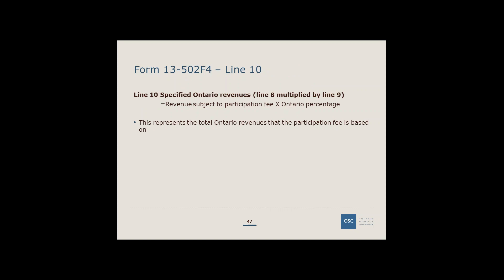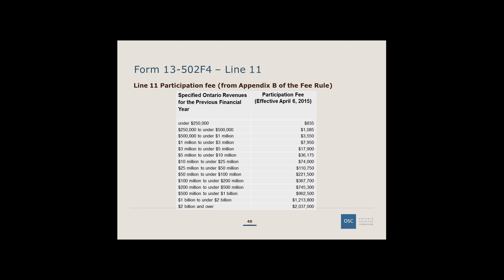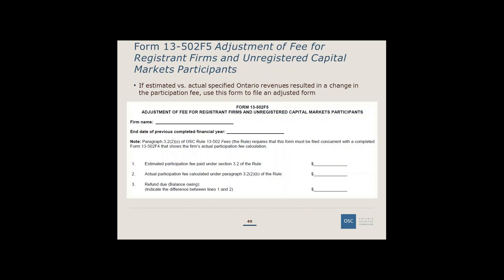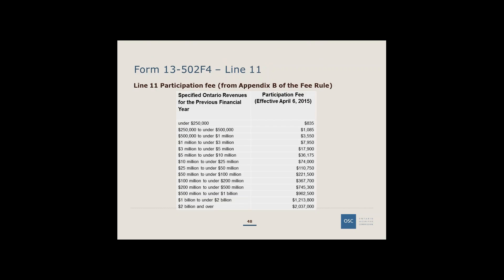After applying the Ontario percentage, you arrive at specified Ontario revenues — the amount used to determine your participation fee from the fee schedule. For example, if specified Ontario revenues are between $500,000 and under $1 million, the participation fee is $3,550. The participation fee is due December 31st for all firms. For firms with an NRD-linked bank account, it is automatically withdrawn; for others, payment is by check or wire transfer.